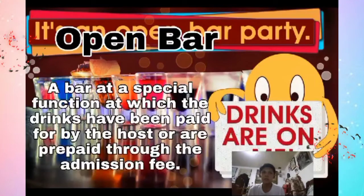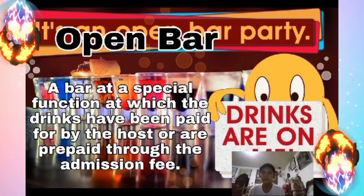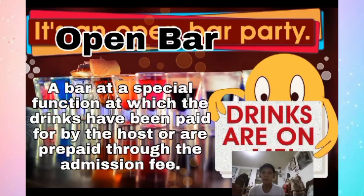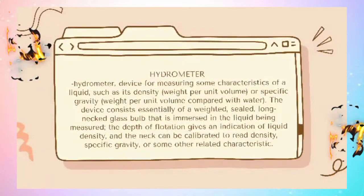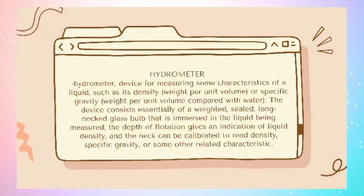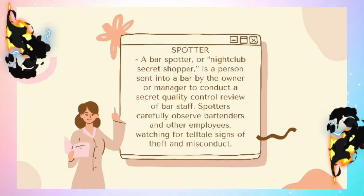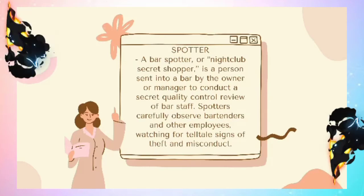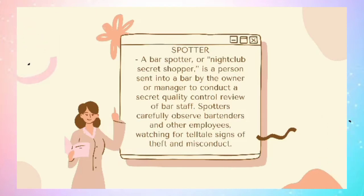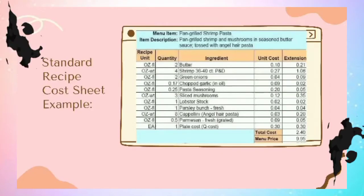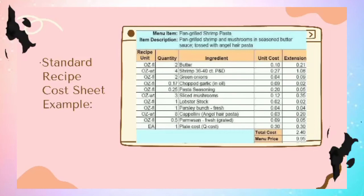An open bar is a bar at special functions at which drinks have been paid for by the host or covered through admission fees. A hydrometer is a device for measuring certain characteristics of a liquid — specifically, it measures liquid density and specific gravity. A spotter is a person sent into a bar by the owner or manager to conduct a secret quality control review of the bar staff.